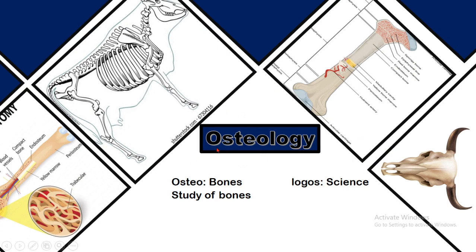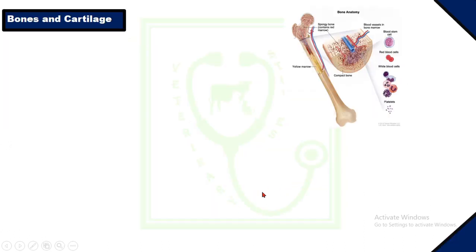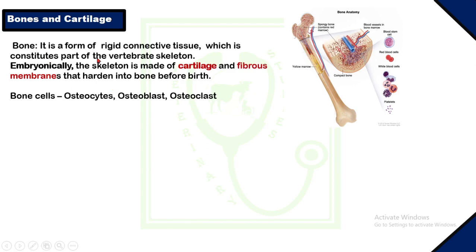Osteology: the word is composed of two parts — 'osteo' meaning bones and 'logos' meaning science — so it is the scientific study of bones in all aspects. Bone is a form of rigid connective tissue which constitutes part of the vertebrate skeleton. Vertebrates are animals having a vertebral column or backbone. In embryonic life, the skeleton is made up of cartilage and fibrous membranes which harden into bone before birth. The cells found in bones are osteocytes, osteoblasts, and osteoclasts.